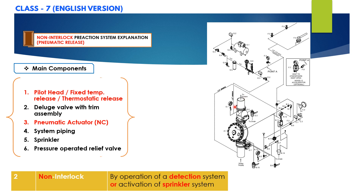If sprinklers have not opened, water will remain in the sprinkler system piping until the sprinkler operates — a sprinkler head must open before water flows from the system. I hope you are clear with the difference between electric release and pneumatic release non-interlock pre-action systems.